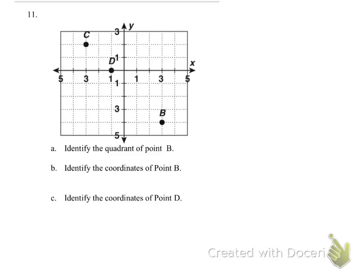It says for part A, we need to identify the quadrant of point B. The first thing you should do is label all of your quadrants. We have quadrant 1, 2, 3, I know my 2 looks a little bit like a 5, and quadrant 4.